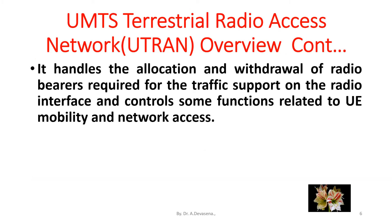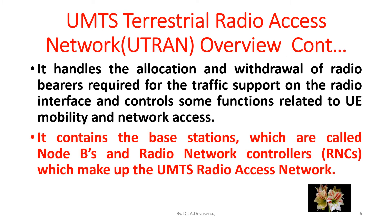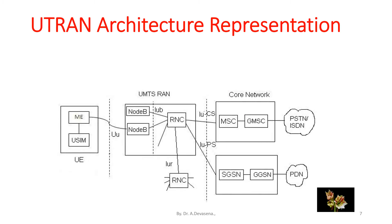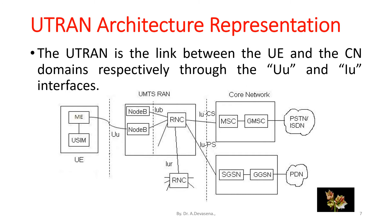UTRAN handles the allocation and withdrawal of radio bearers required for traffic support on the radio interface and controls some functions related to user equipment, mobility, and network access. It contains the base stations, which are called Node B, and the radio network controllers, RNCs, which make up the UMTS radio access network, that is UTRAN. UTRAN is the link between the user equipment UE and the core network domain, CN domain, through the Uu interface and Iu interfaces respectively.